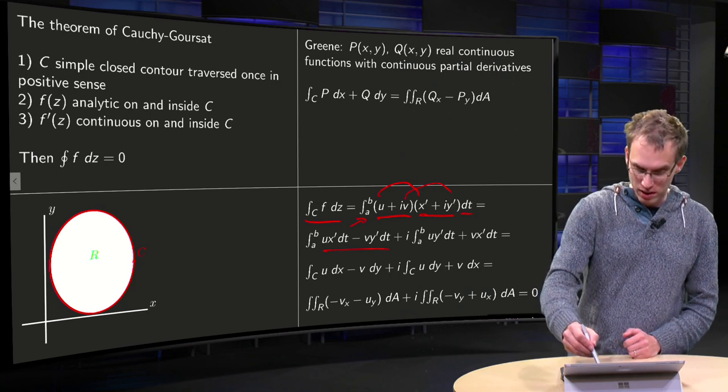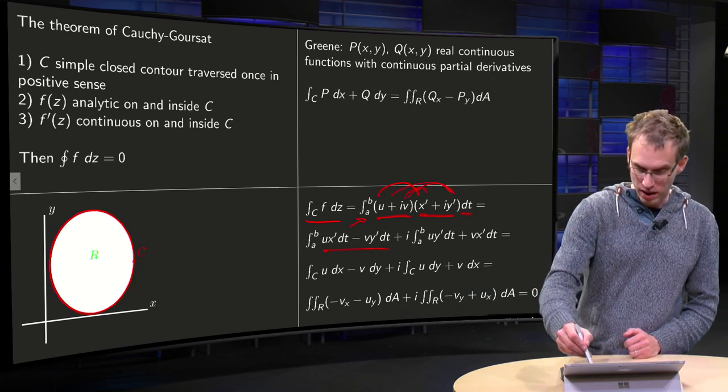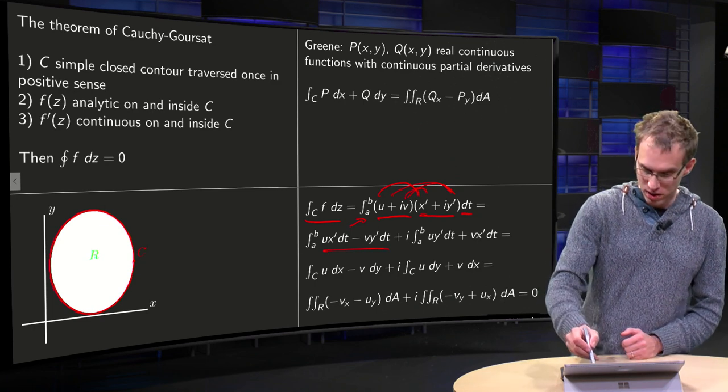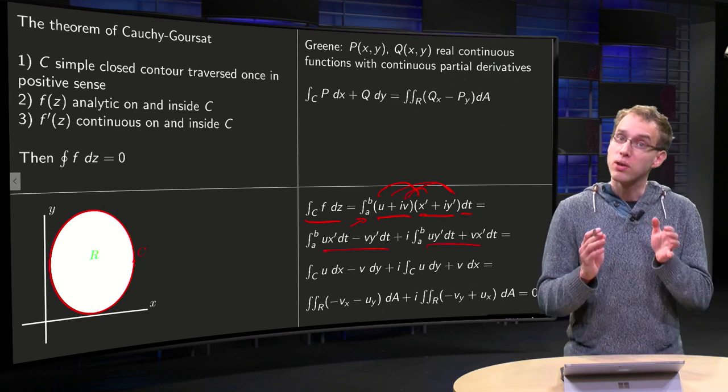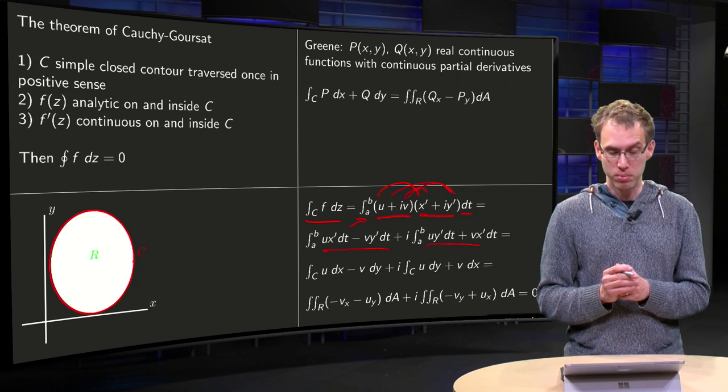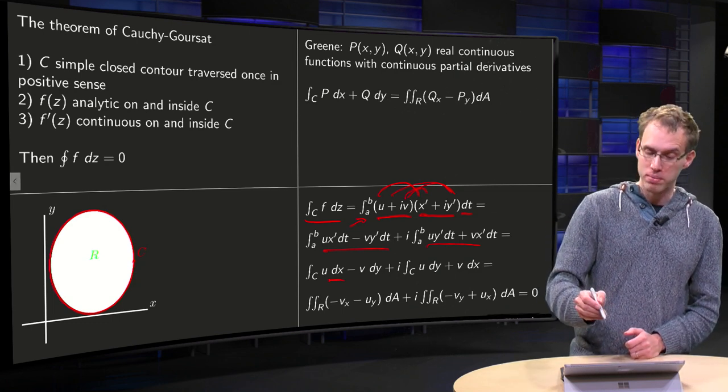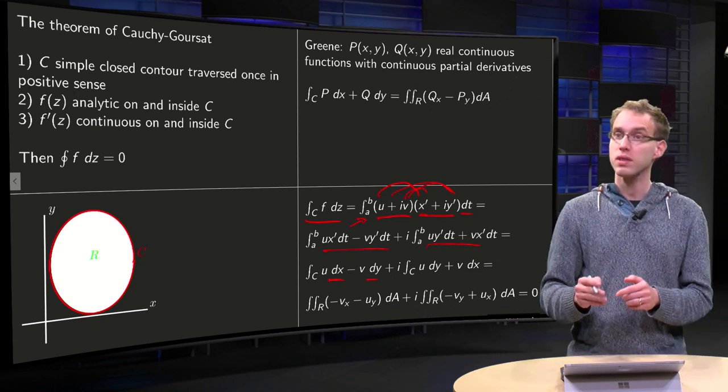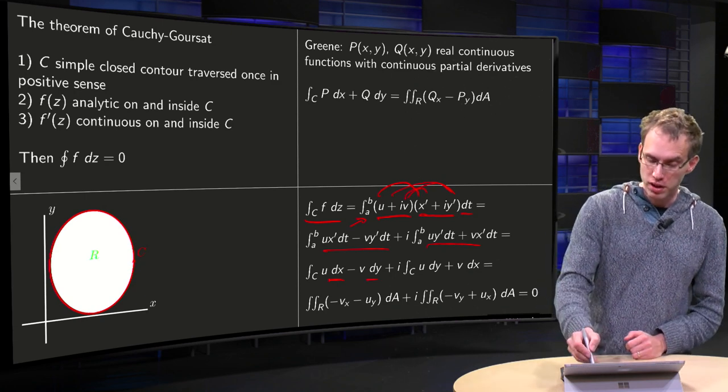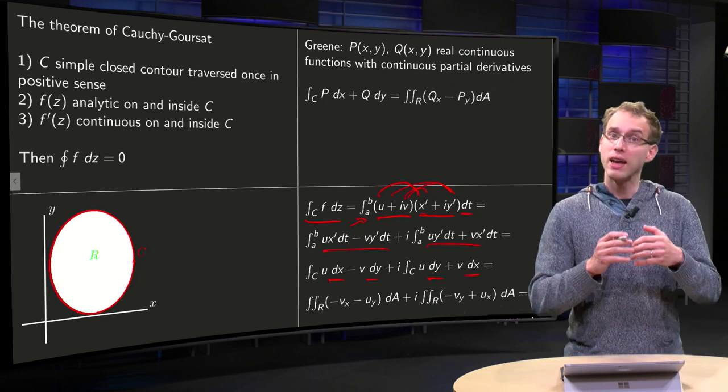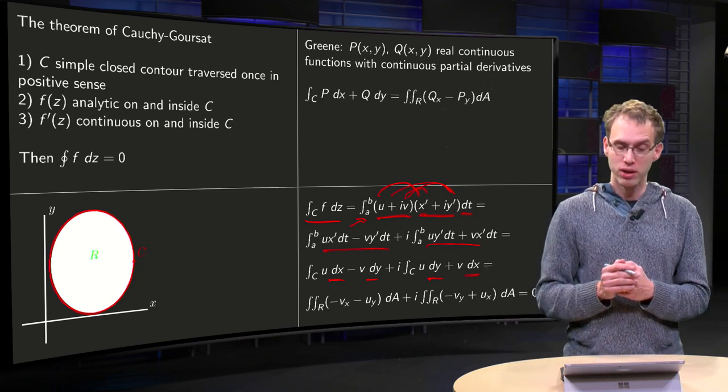And you get an i times V times X prime and an i times U times Y prime dT. That's what we have over here. So, the X prime dT becomes dx and the Y prime dT becomes dy. Similarly, for the imaginary part, all integrals along C. And now you can use Green's Theorem.